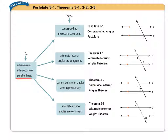If a transversal intersects two parallel lines, then corresponding angles are congruent. That is a postulate. Remember, postulates are just rules that we accept as true.